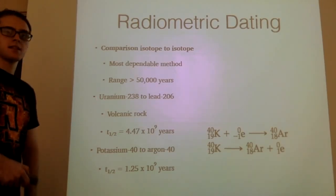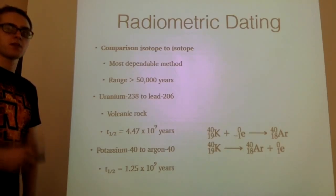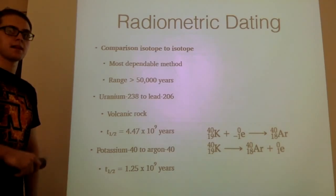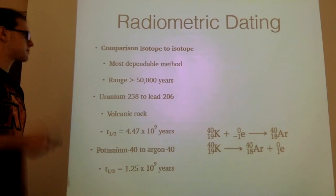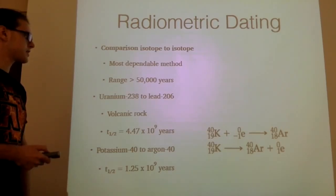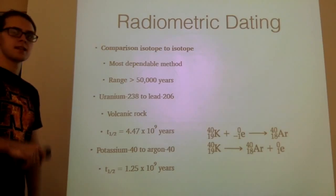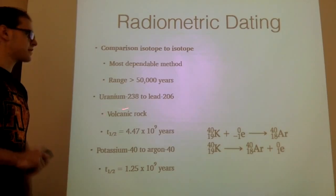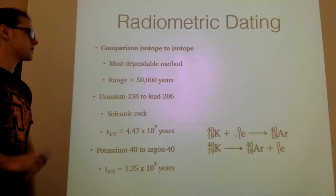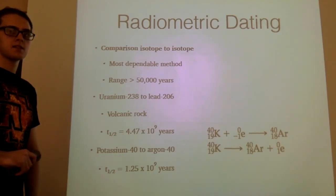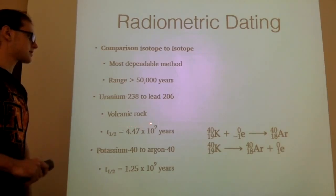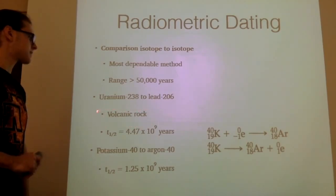This is done with uranium-238. The way this is done is by measuring the decay of one isotope in comparison to something else it turns into. We have uranium-238 that will decay into lead-206. This is very common in volcanic rocks.